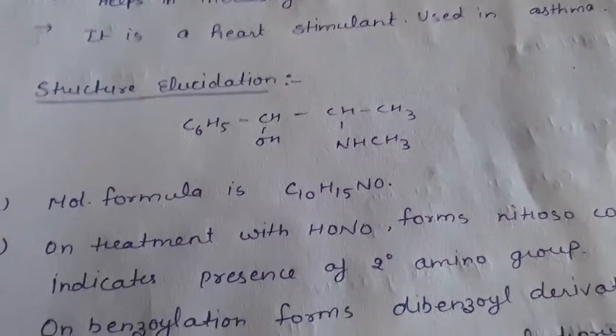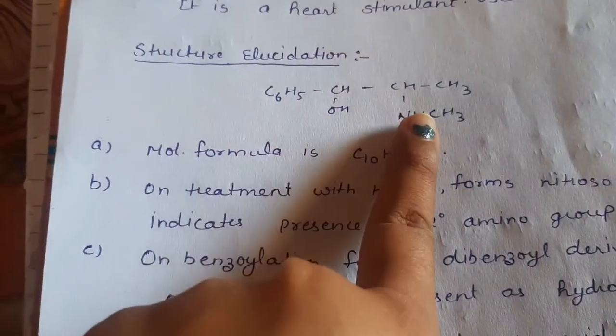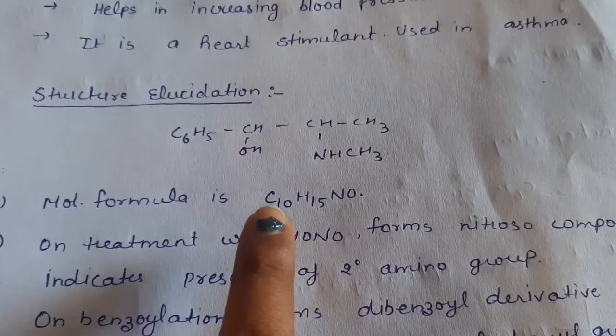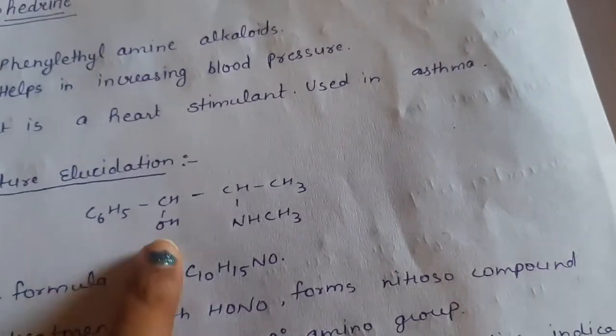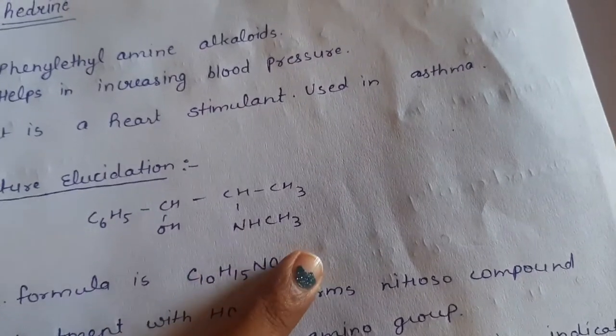The structure of ephedrine is this one: C6H5-CHOH-CH(NHCH3)-CH3. Now let's see that it has an OH group and one NHCH3 group.